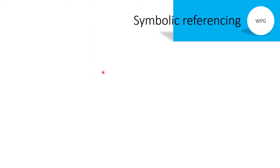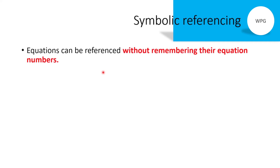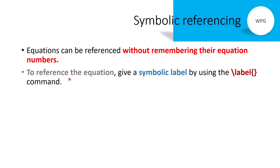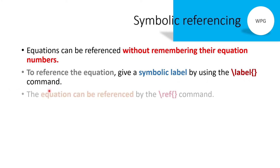Now let's look at symbolic referencing. Symbolic referencing means obtaining the reference of the equation number and the page number of that equation. Equations can be referred to without remembering their equation numbers. To reference an equation, give it a symbolic label using the \label command.